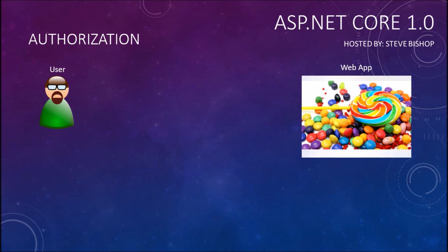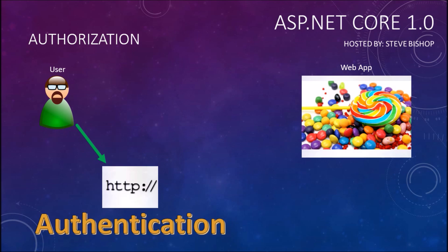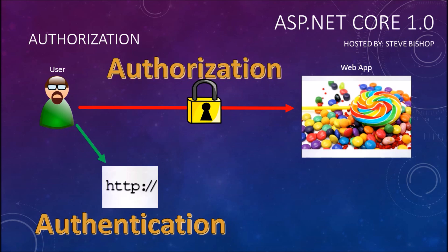We've already set up one part of this — the user can go to the login screen and authenticate themselves. They have their username and password set up, and now that we know who they are we can start adding this padlocking. We can check whether that person is authenticated, and that process is called authorization — locking up sections of our application so that only authenticated users have the authorization to access those areas.